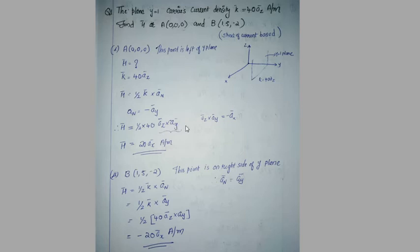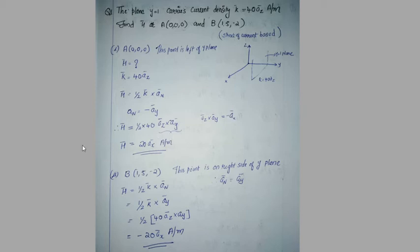az cross ay gives a different cross product term. az cross ay equals minus ax. The two minus signs cancel, giving ax. Therefore, H equals 20ax amps per meter for point A. This is the magnetic field intensity expression for this case.